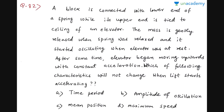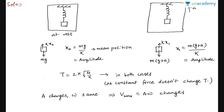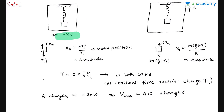The next question is a bit long — read it yourself. It is theoretical, so pause and try to solve it. In the solution: initially, the block is gently released when the spring is relaxed. It goes down some distance, and the mean position is where the net force is zero. For net force = 0: downward force is mg, upward force is kx₀, so x₀ = mg/k. That mg/k is the mean position, and since it started from rest at the natural length, the amplitude is also mg/k.